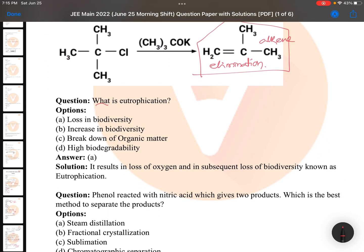What is eutrophication? This is of environmental chemistry. Eutrophication you may study in your schooling also, otherwise you need to remember as I repeatedly say: polymers, environmental chemistry, chemistry in everyday life, and biomolecules - NCERT line to line you remember the points in NCERT. So here loss in biodiversity: It results in loss of oxygen and in subsequent loss of biodiversity, known as eutrophication.